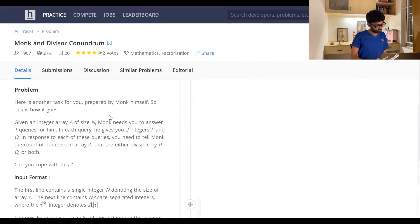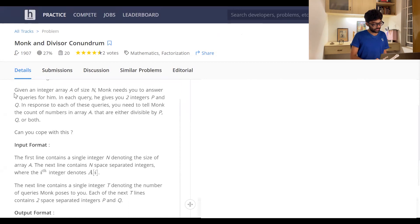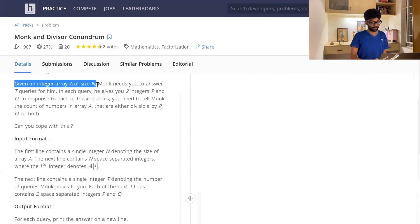Monk and Divider Conundrum. Here's another task that Monk prepared for you. You're given an integer array A of size N. Monk needs you to answer T queries for him. In each query, he gives you two integers P and Q. In response to each of these queries, you have to tell Monk how many numbers in the array are divisible by P, Q or both. Can you cope with this? I think we can, but first let's have a closer look at the question.